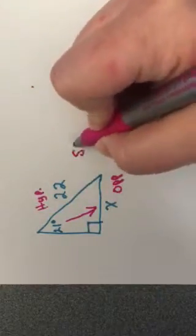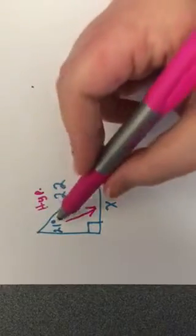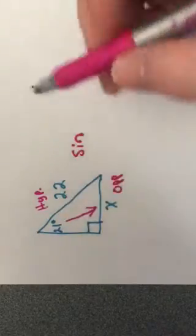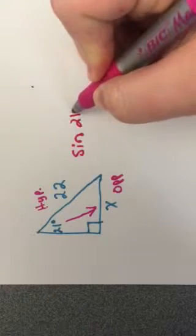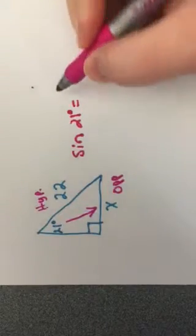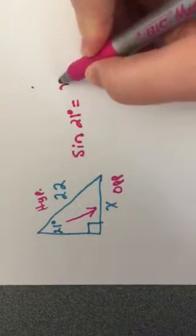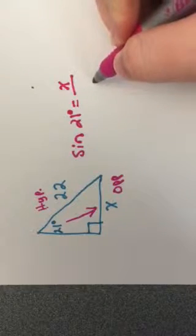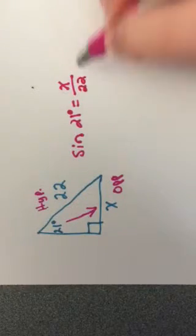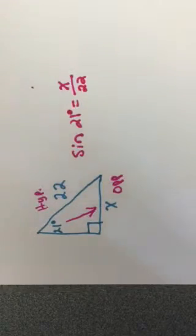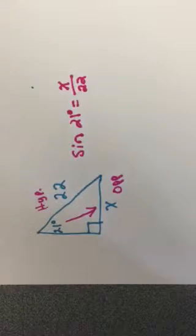So sine of, which angle measure did they give us? They gave us 21 equals opposite over hypotenuse.